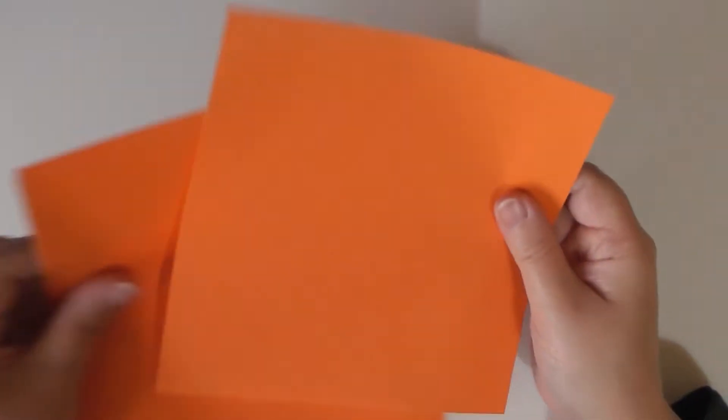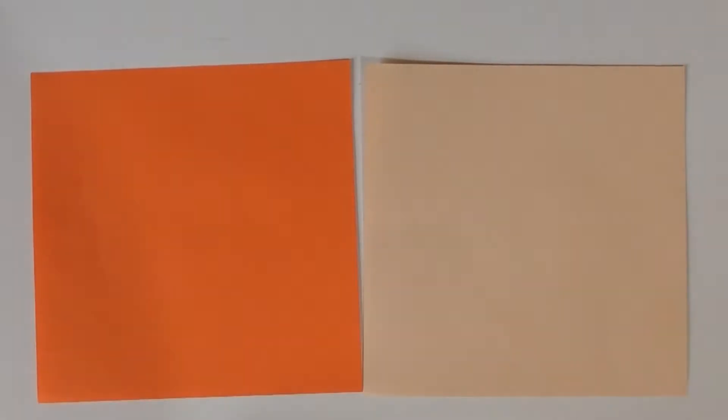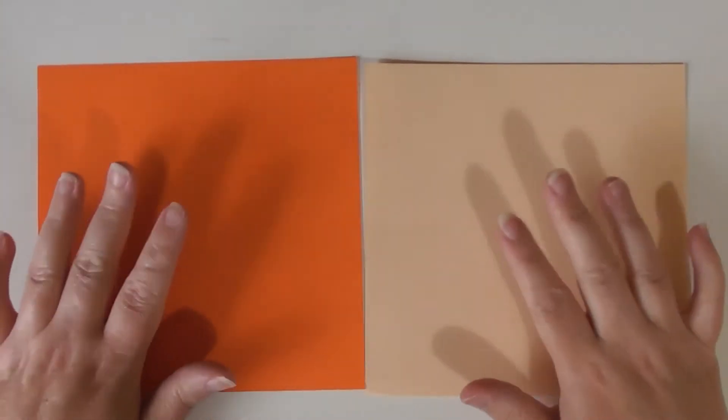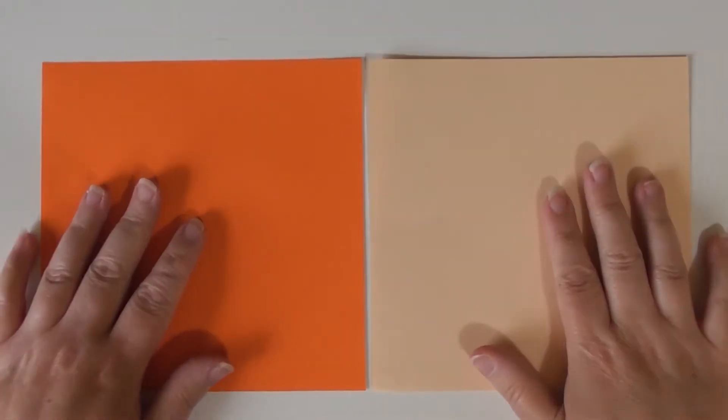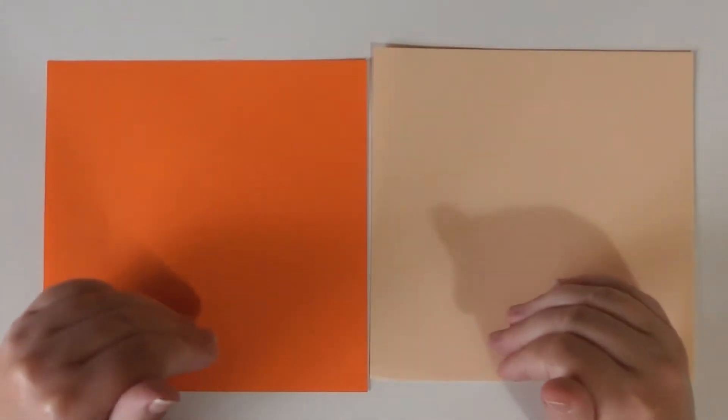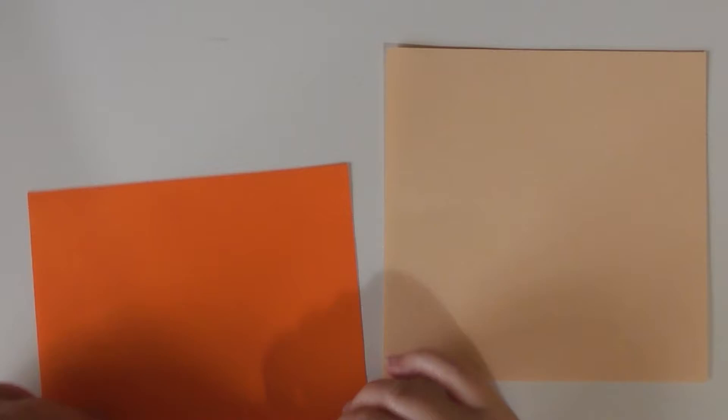So you want two pieces of origami paper of the same size. Now we're going to fold simultaneously, so we're going to take turns folding them, because they're identical up to a point and then they become mirror images of each other. So it's better to fold them together so you know you're getting the correct mirror image.